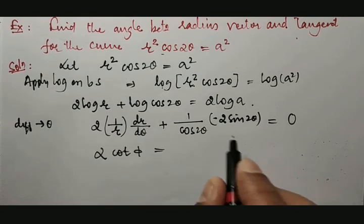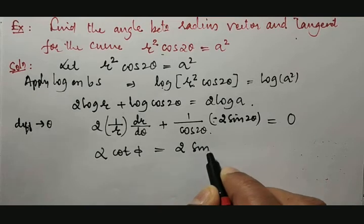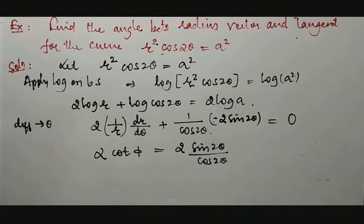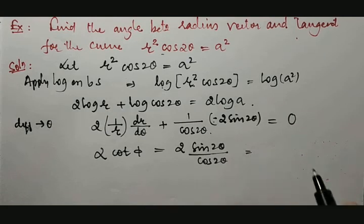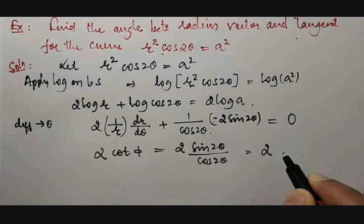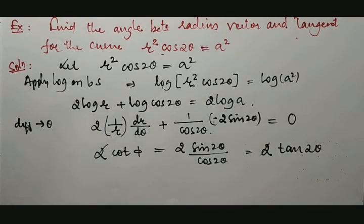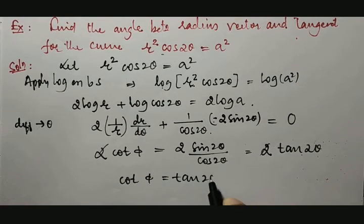I will take it to the other end, then minus becomes plus. It is 2 sin 2θ / cos 2θ, which is 2 tan 2θ. 2 gets cancelled. So we got cot φ = tan 2θ.